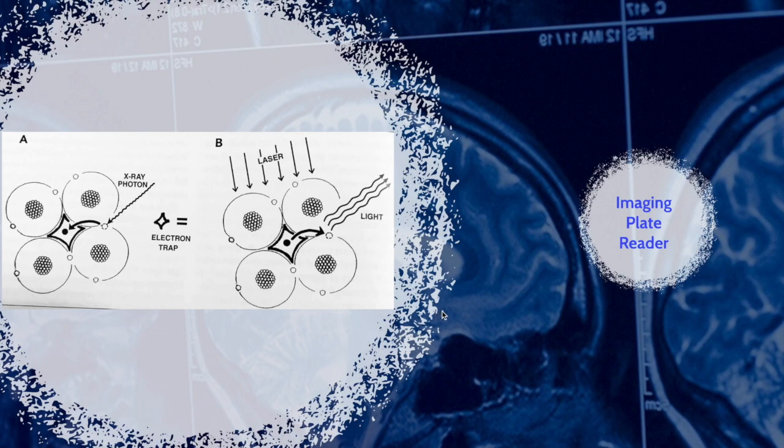Here is an illustration on how the latent image is produced. In figure A, the x-ray photon strikes the electron, causing the electron to jump into the middle of the lattice. That process is called metastable state. The x-ray photon is converted into light photons.